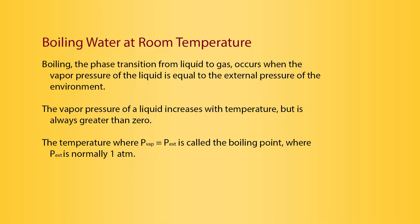Boiling, the phase transition from liquid to gas, occurs when the vapor pressure of the liquid is equal to the external pressure of the environment. The vapor pressure of a liquid increases with temperature, but it's always greater than zero. The temperature where the vapor pressure is equal to the external pressure is called the boiling point, where the external pressure is normally one atmosphere.